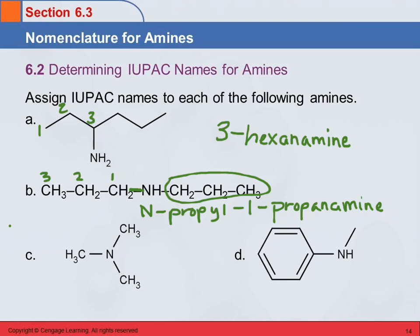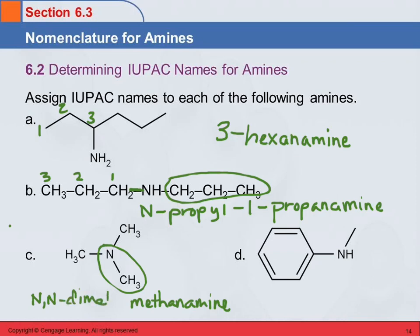Letter C: what's the longest carbon chain? It's not much of a chain — one carbon. One carbon is methane, so that would be methanamine. What's attached to the nitrogen? We have two groups on the nitrogen — dimethyl. They're both on the nitrogen, so it's N,N-dimethyl-methanamine. There's no number one on the methanamine because there's only one carbon — it has to be on the first carbon. So: N,N-dimethyl-methanamine.